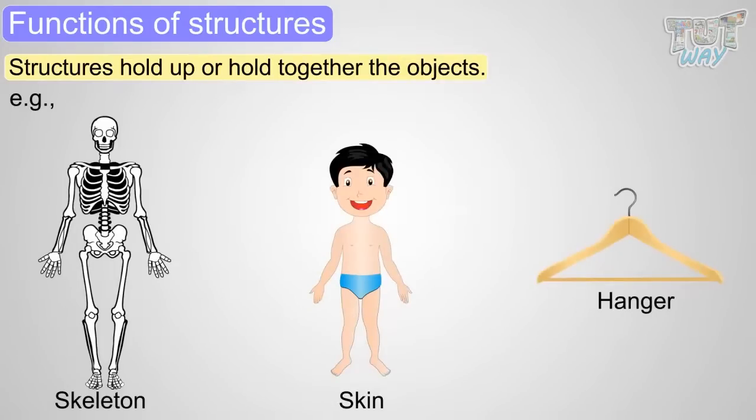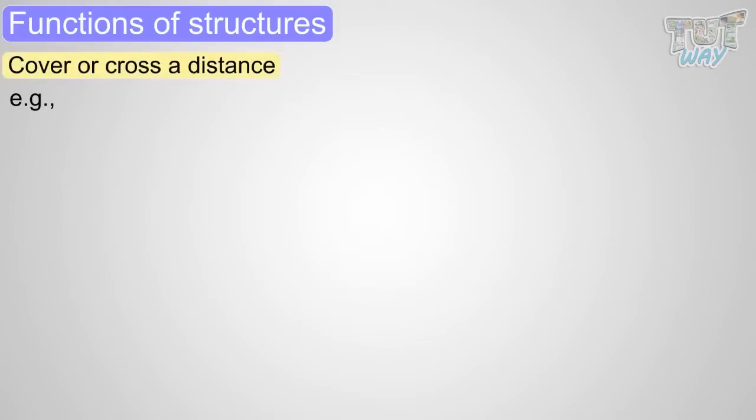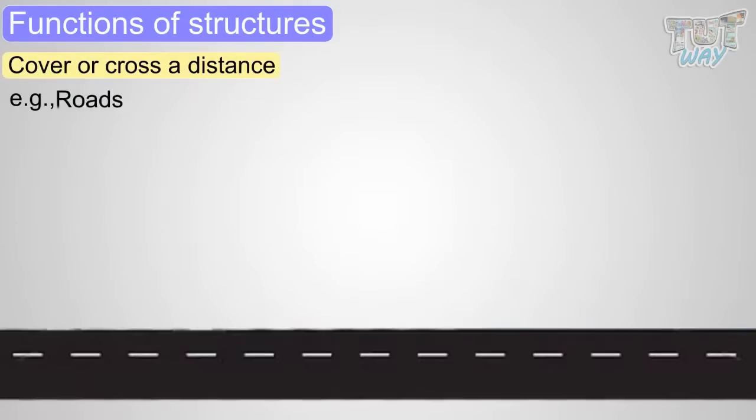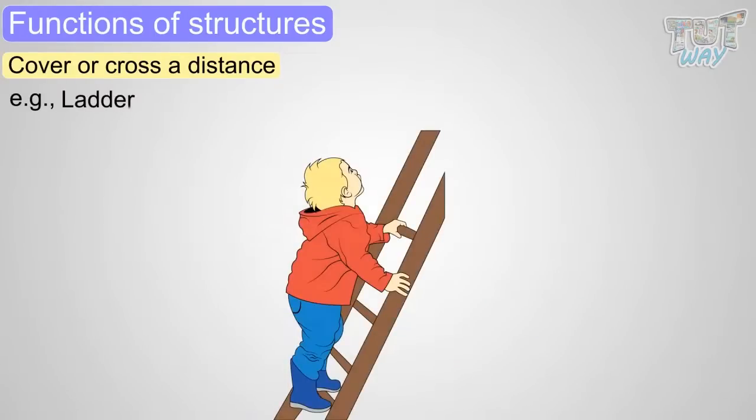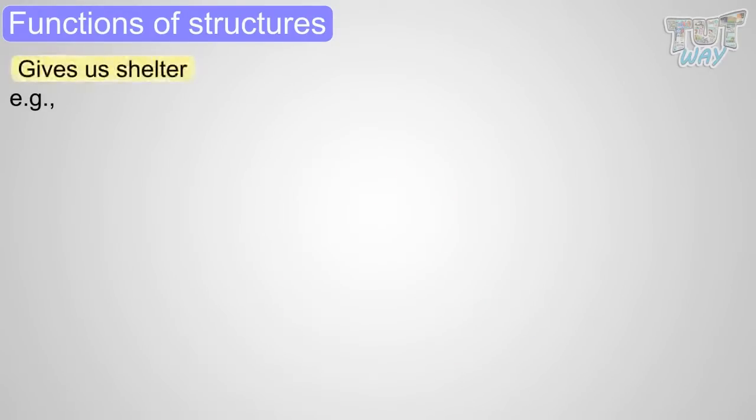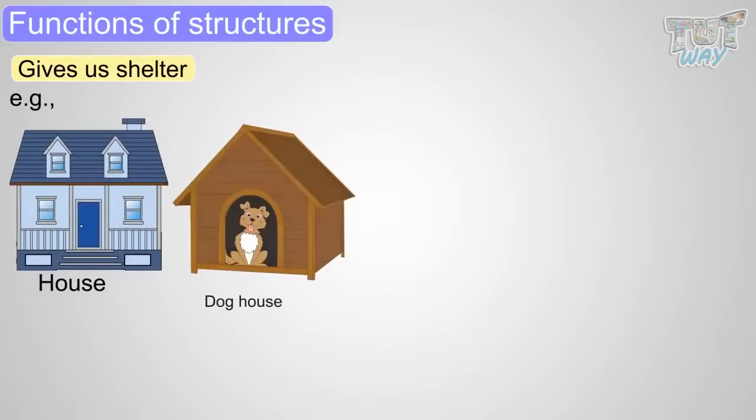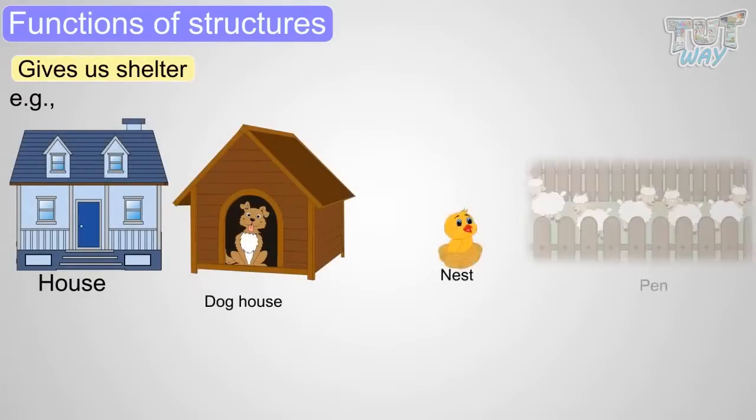Structures help to cover or cross a distance, like a railway track, roads, bridges, or a ladder. We learned structures give us shelter, like our houses, dog houses, nests, pens, or a coop.